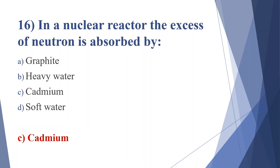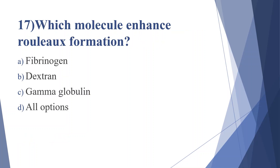Seventeenth question: which molecules enhance Rouleaux formation? Option A: fibrinogen, option B: dextran, option C: gamma globulin, option D: all of the above. Answer is option D, all options.